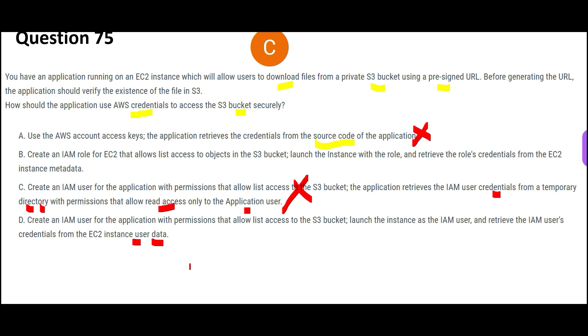So temporary directory credential is not the best practice, and D is wrong because in fact user data you cannot store credentials. Option D is wrong because it is making use of user data. Why do we use instance user data? Suppose when our instance is booting up, it is starting, and during starting you want to ensure that some Docker software is installed, then you can put that stuff in the instance user data. The moment the instance starts, it will also install Docker. But here we don't want to install any software. So why would we use user data? Just because of this, D is wrong.